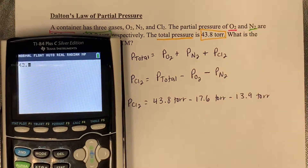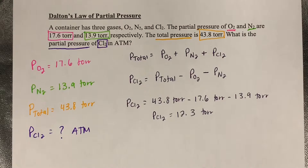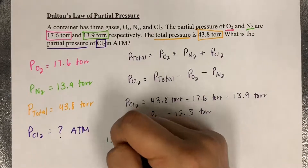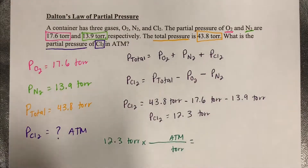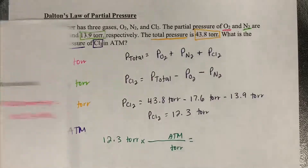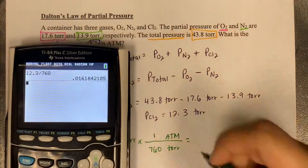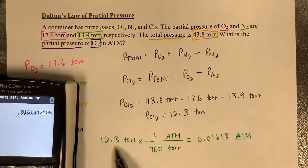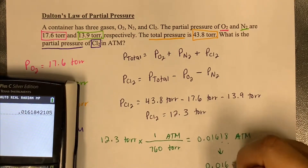Plug it into the calculator. You get 12.3 — the correct number of sig figs because it has the same number of decimal places. But we're not done because we have to solve in ATM. That's just a simple conversion using dimensional analysis. Write your given: 12.3 torr. At the bottom write torr, top ATM, and use the conversions — there is 1 ATM in 760 torr. Plug it in, use three sig figs. The final answer would be 0.0162 ATM.